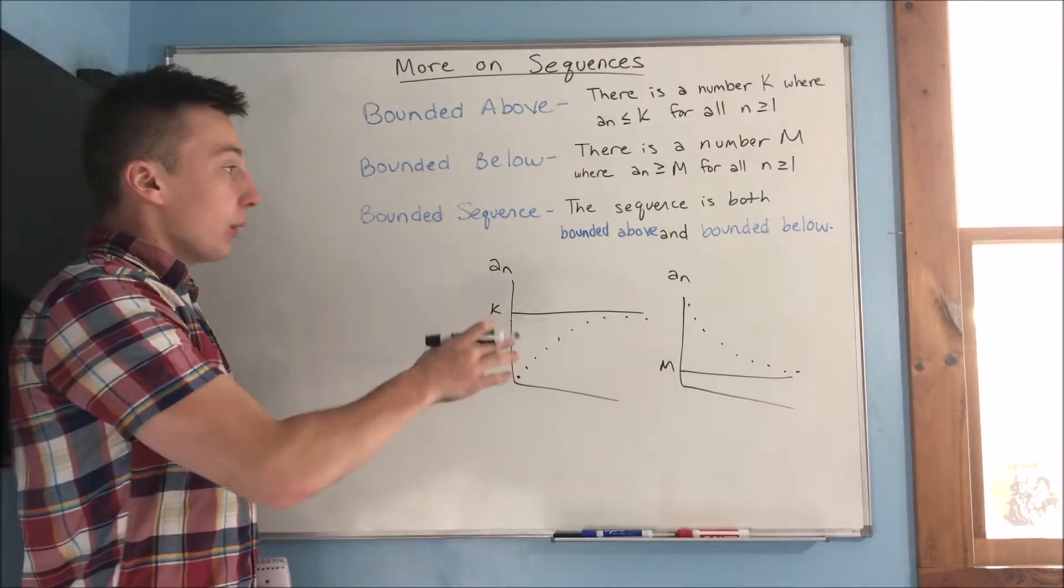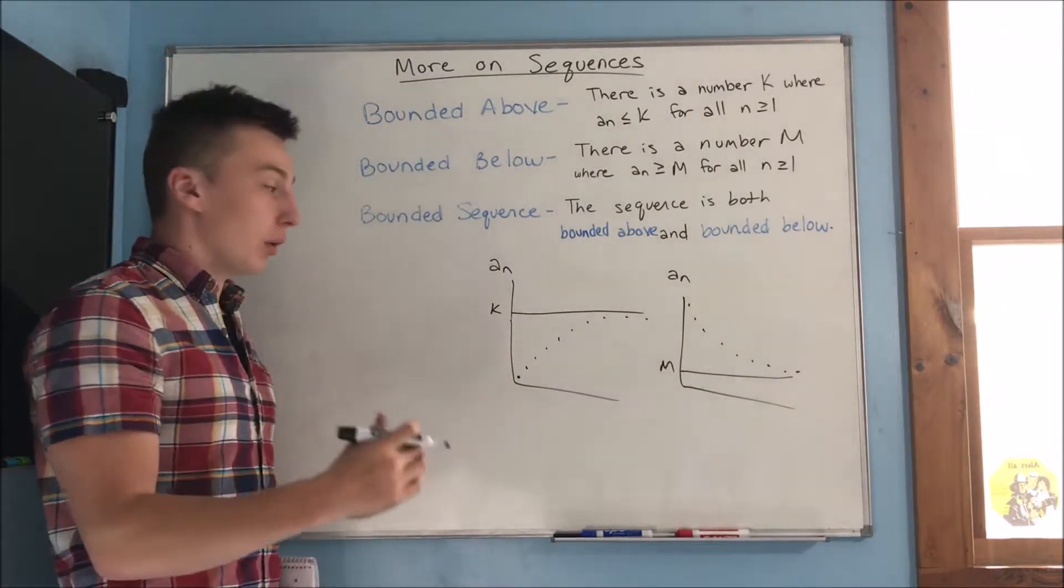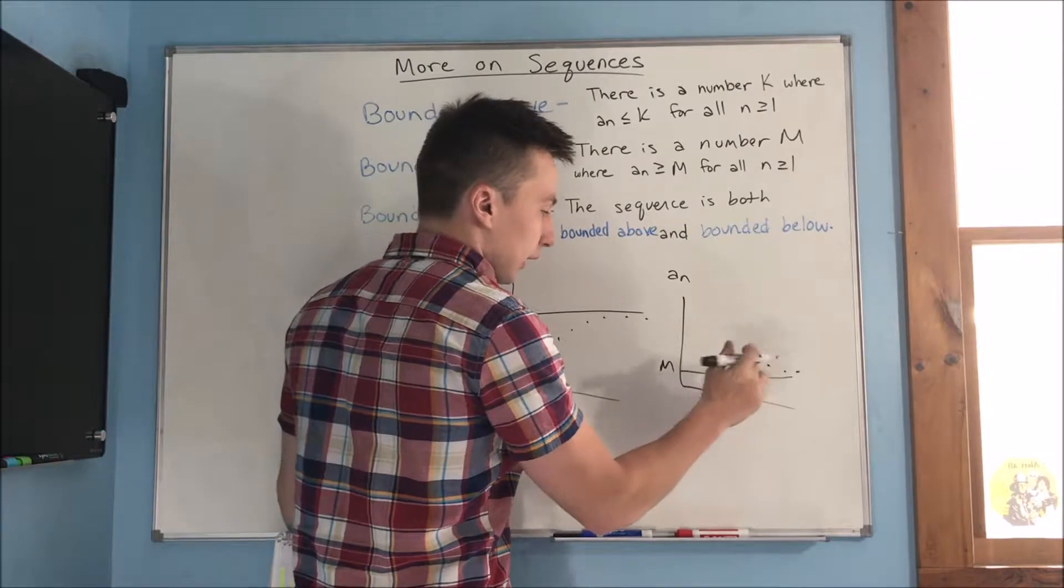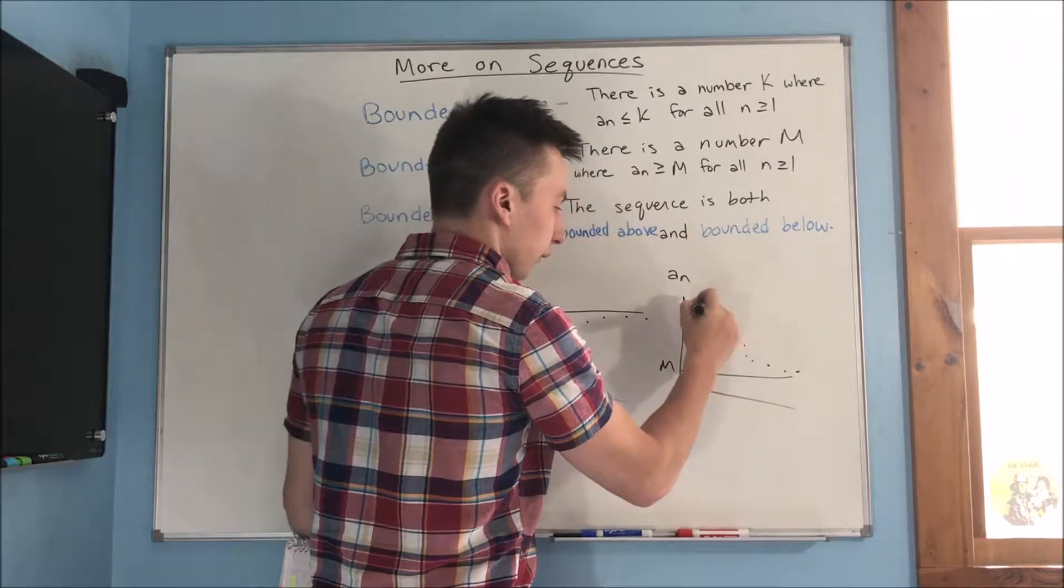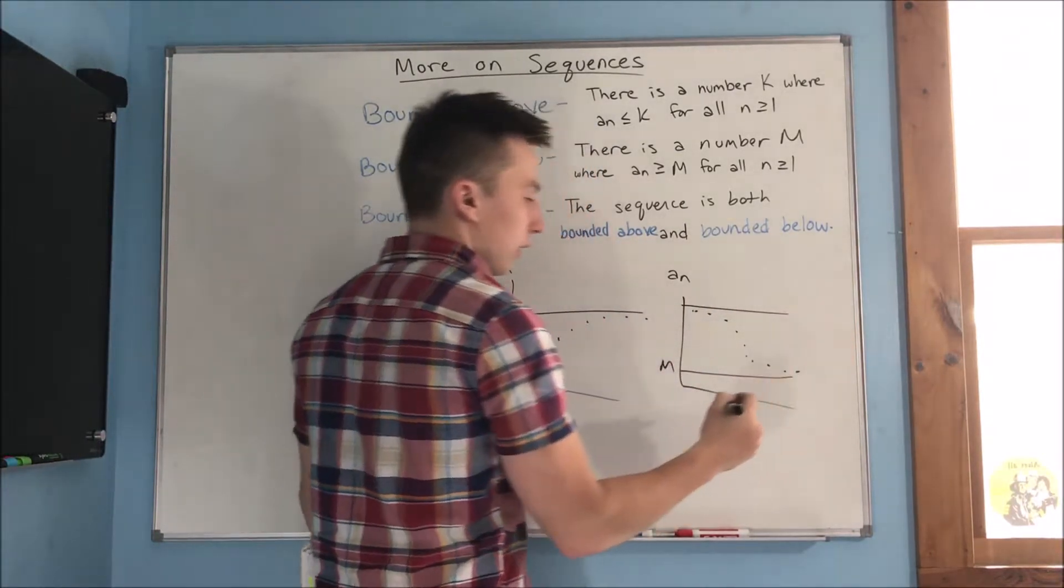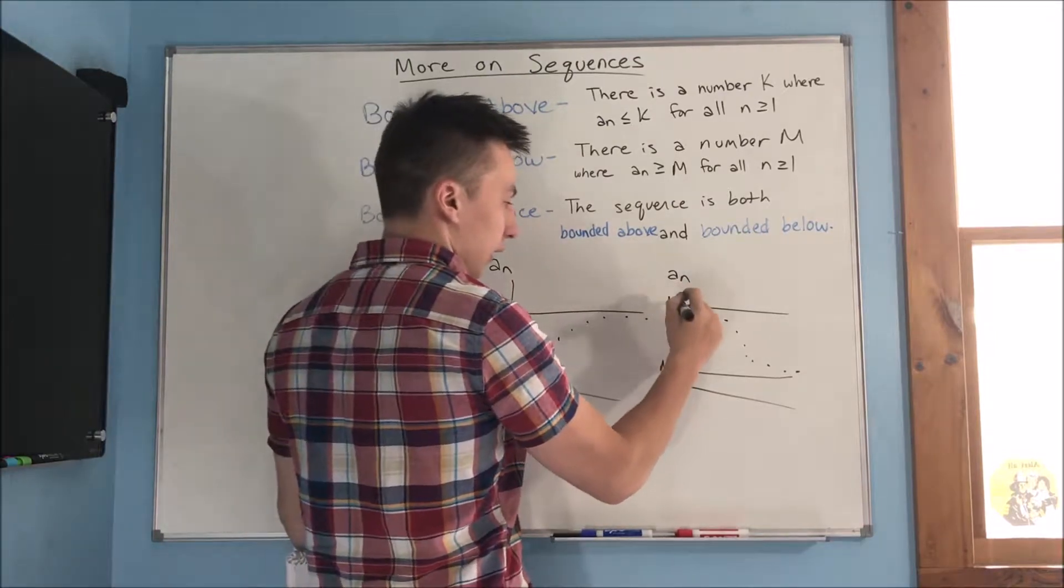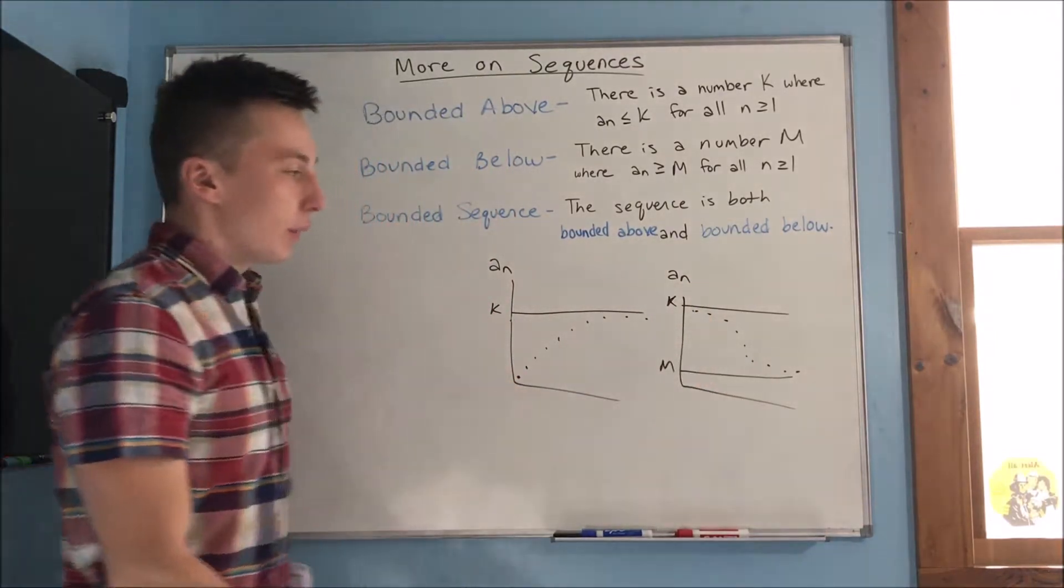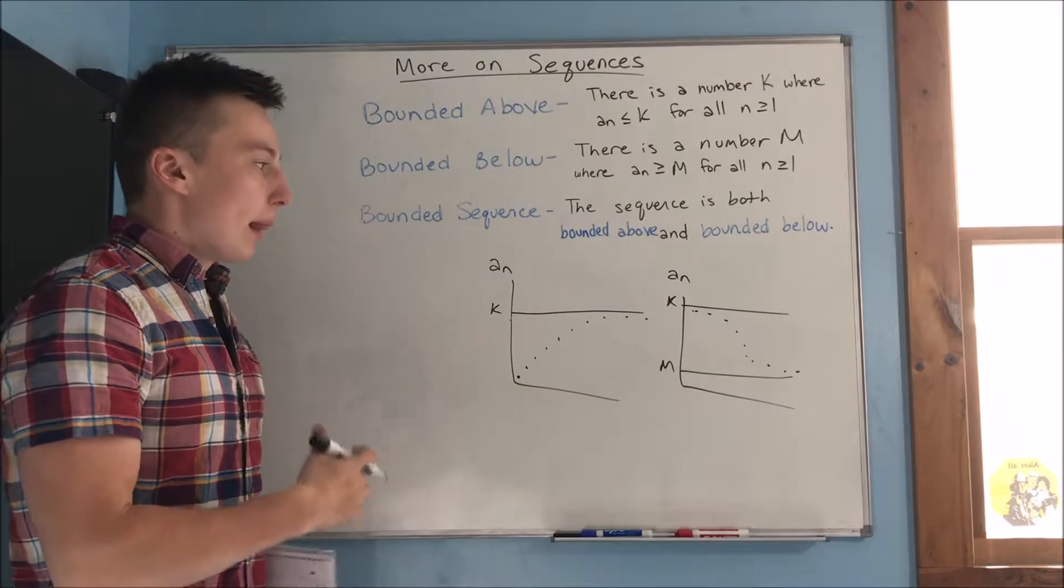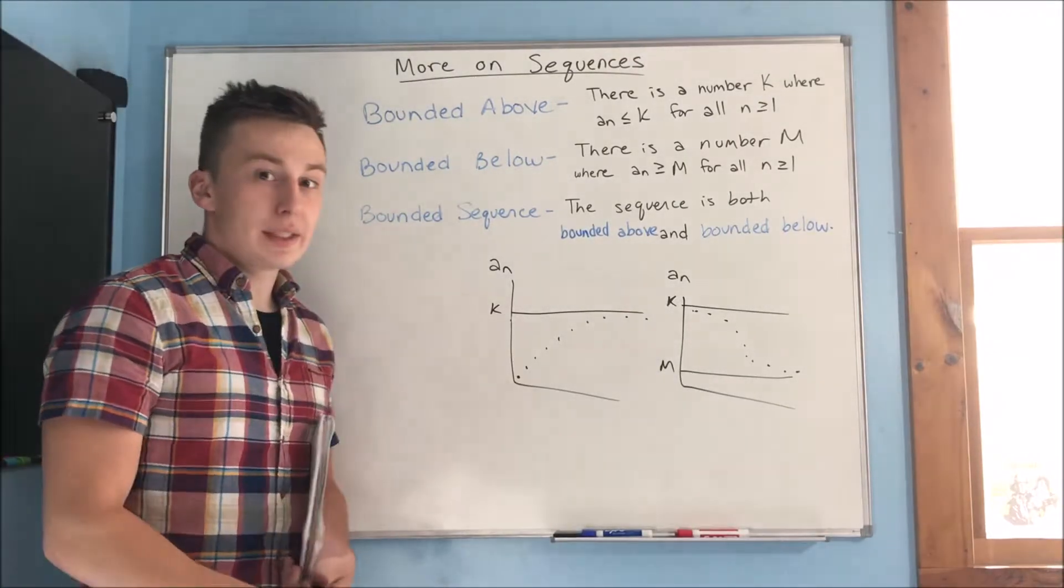Now, if a sequence is both bounded above and below, so say that maybe it looks something like this. And we can put a k in here. This is called a bounded sequence. So, just some terms to get familiar with.